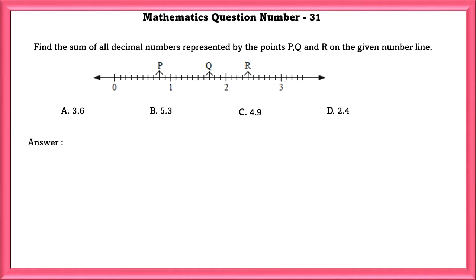Find the sum of all decimal numbers represented by the points P, Q and R on the given number line. From the number line we can see that point P is equal to 0.8, Q is equal to 1.7 and R is equal to 2.4. Sum of these is equal to 4.9.